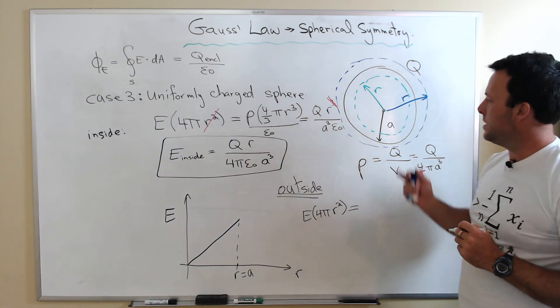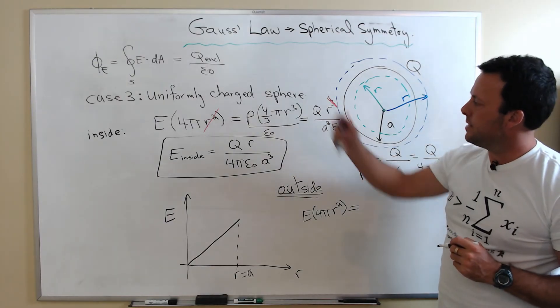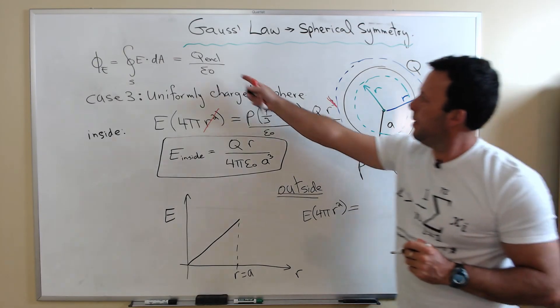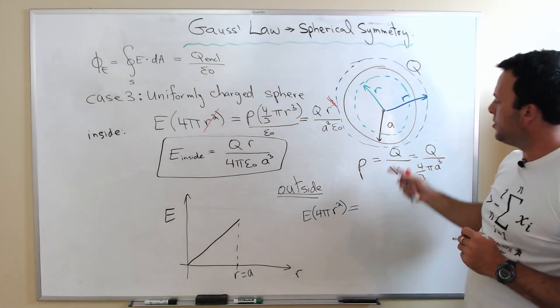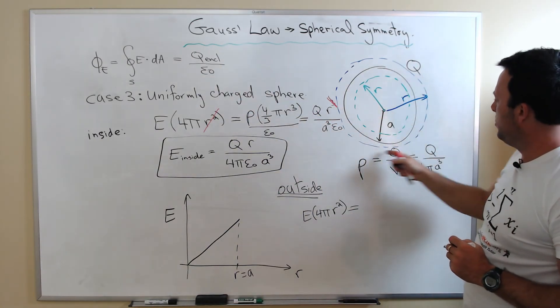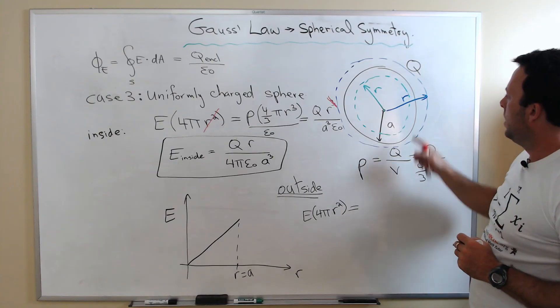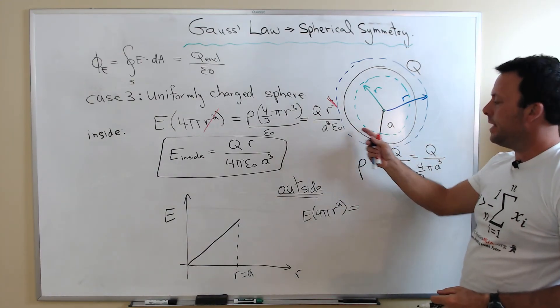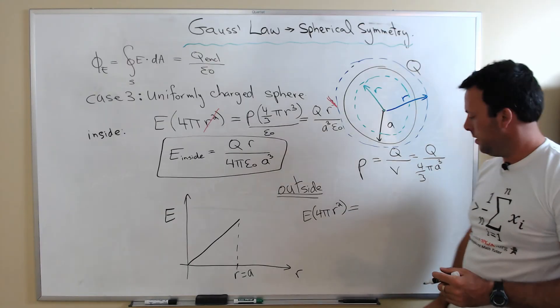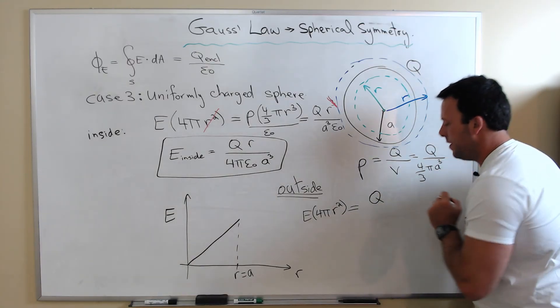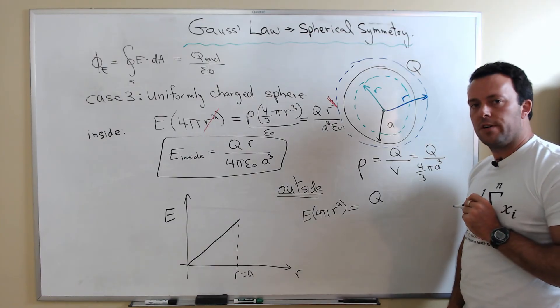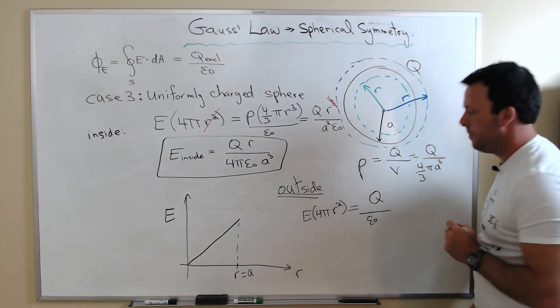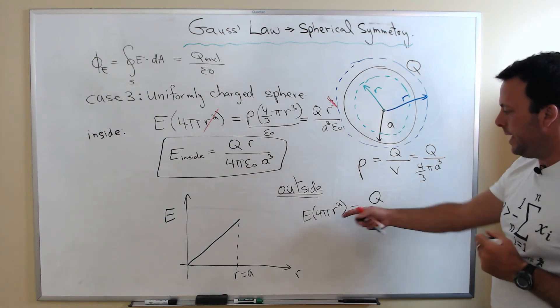For this specific case, actually, the right-hand side is much easier than when you're inside the sphere. So the right-hand side of Gauss's law, we need to know how much charge is enclosed by this blue sphere. It's the entire object. The entire object is located inside that shell. Therefore, this term is very easy. It's simply the total charge of our sphere. And you have to divide by epsilon zero.